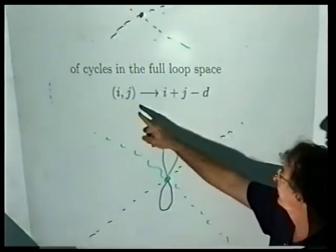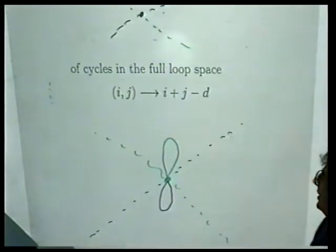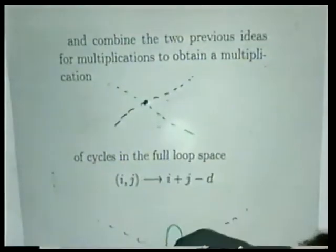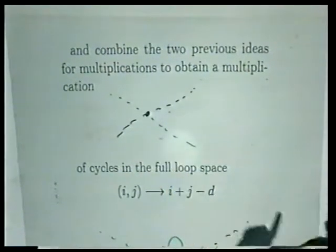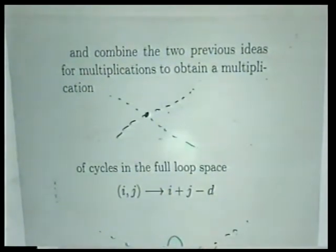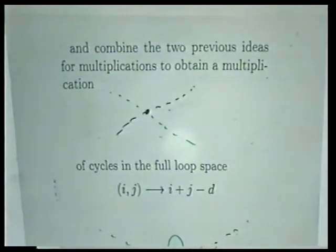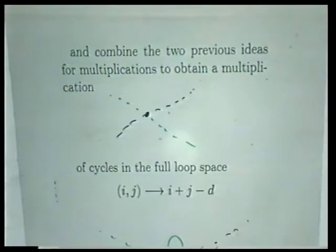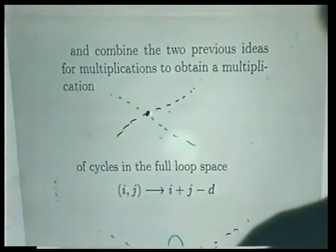This will take an i-chain and a j-chain and map it to an i plus j minus d chain, because you lose d dimensions by imposing the condition that the base point here equals the base point there — those are d conditions, d equations in the manifold. The rest of the talk will be about discussing what are the algebraic properties of this operation.